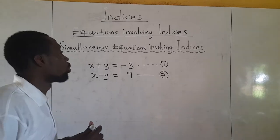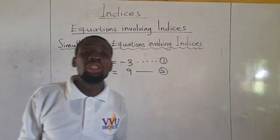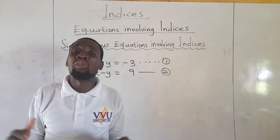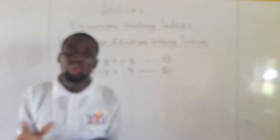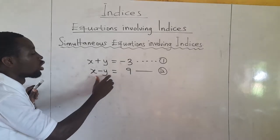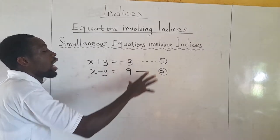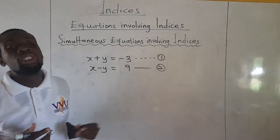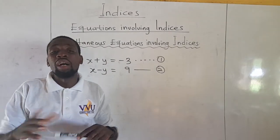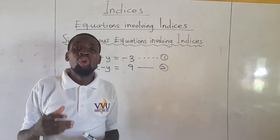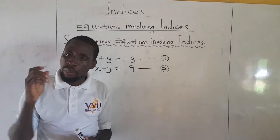We start with the simultaneous equation involving indices. When we talk of simultaneous equations, it is when two or more equations are given to you to solve at a time. For example, x plus y equals negative 3 as our first equation, and x minus y equals 9 as our second equation, and we are asked to solve simultaneously. There are three fundamental ways: by elimination, by substitution, and by graphical method. You determine which method is appropriate.